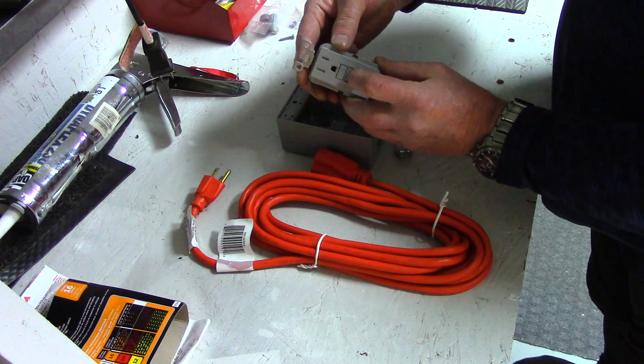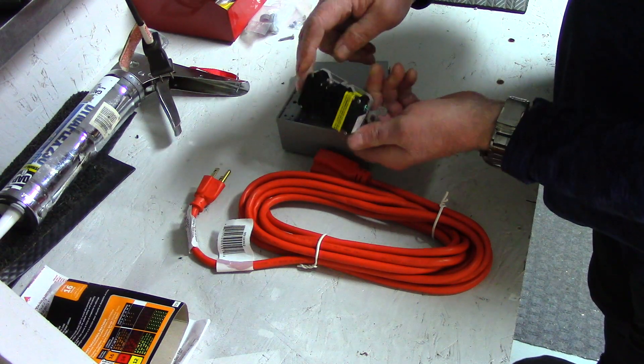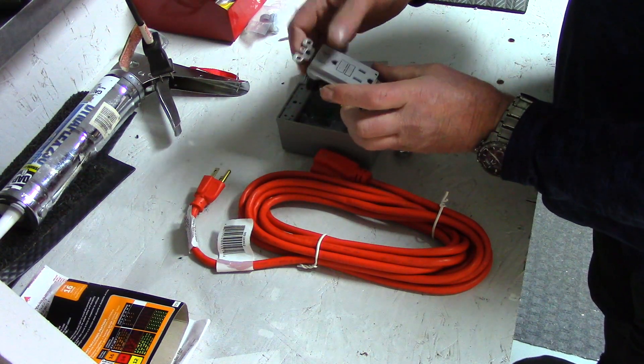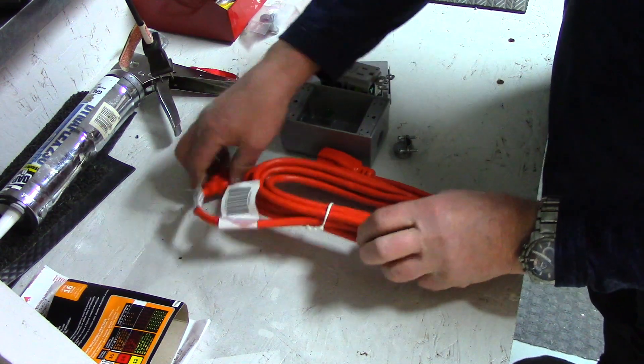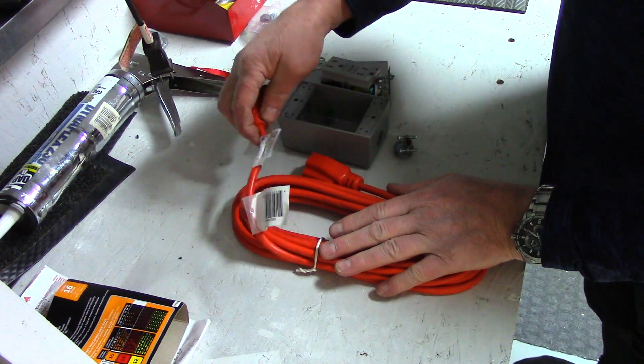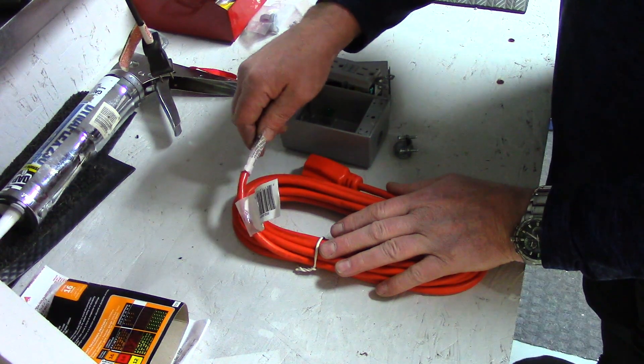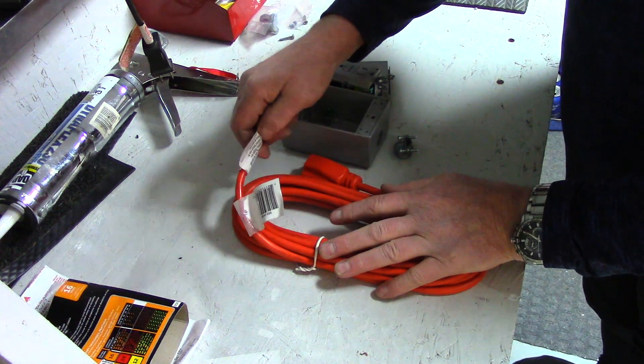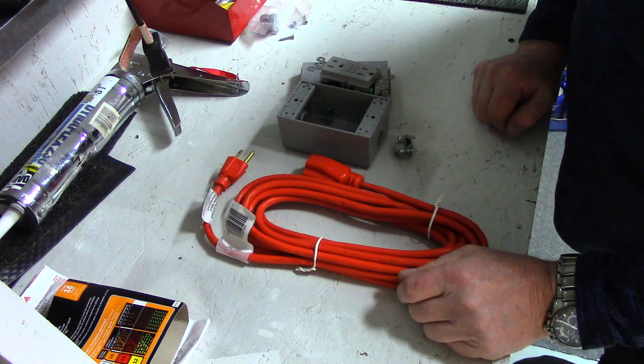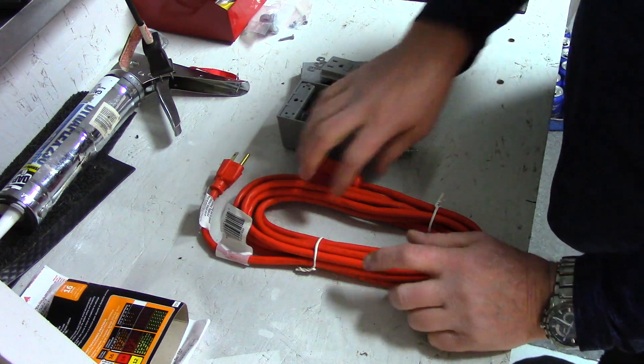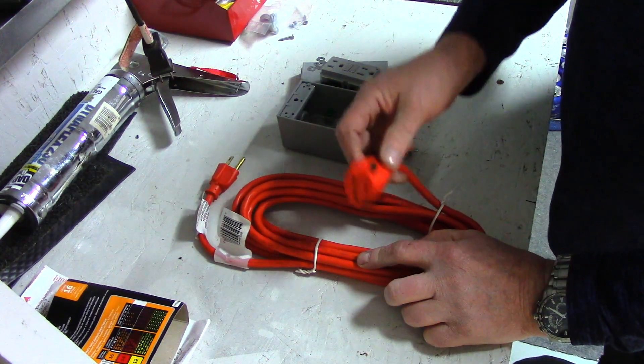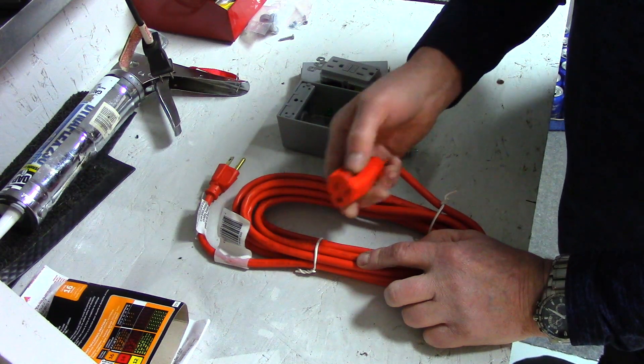That's how you know it's a GFI plug. Then for the extension cord, get yourself a good heavy-duty extension cord - 14 gauge, even 12 gauge. We're going to have to cut this one end off because it's not GFI. This little guy here is just a gripper so when you plug something in it doesn't unplug.